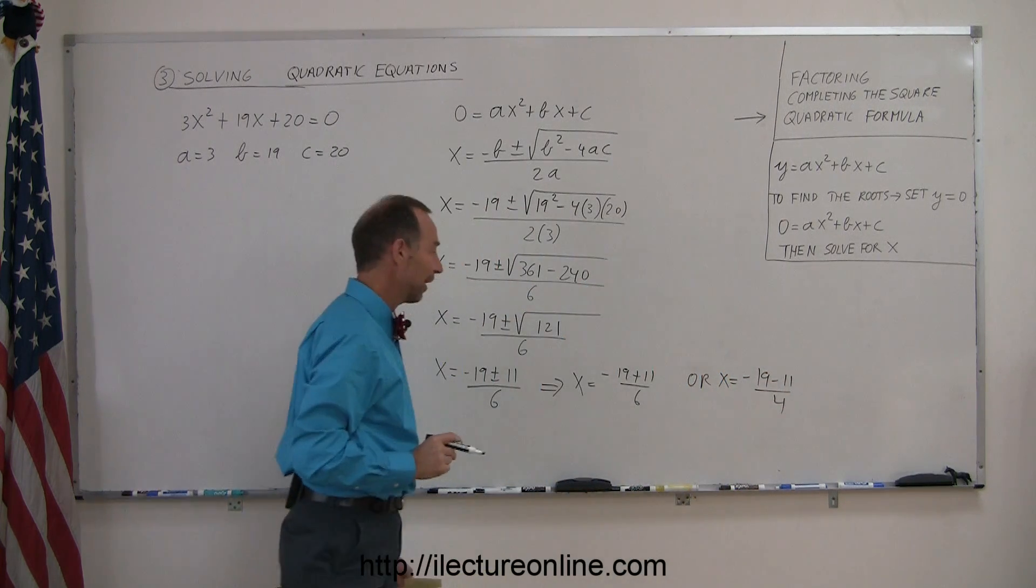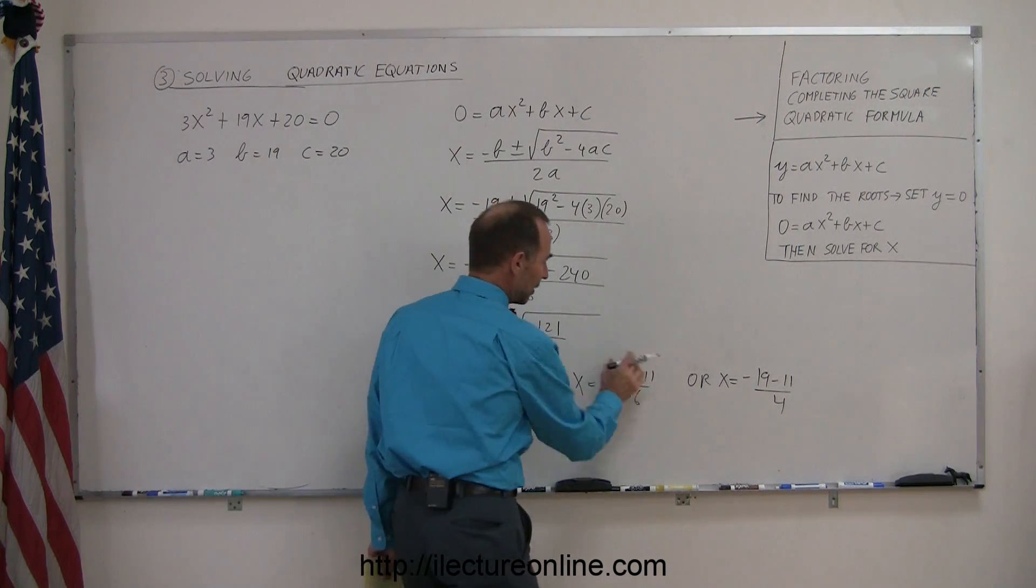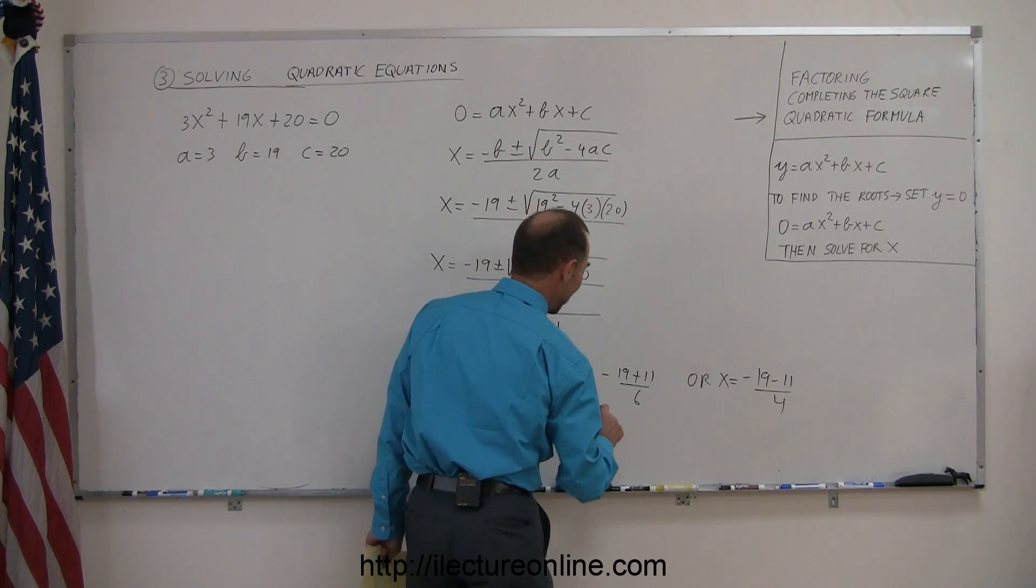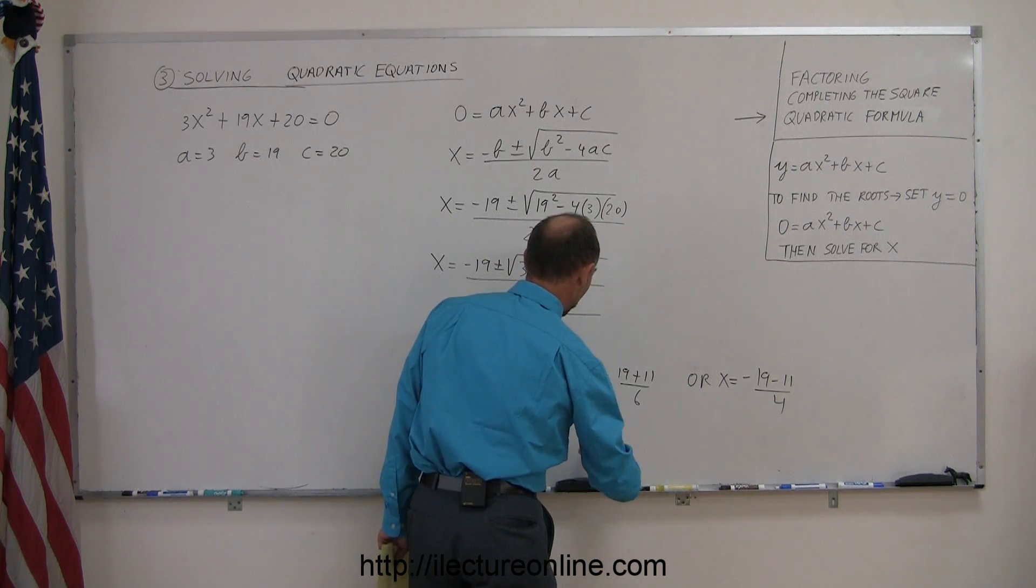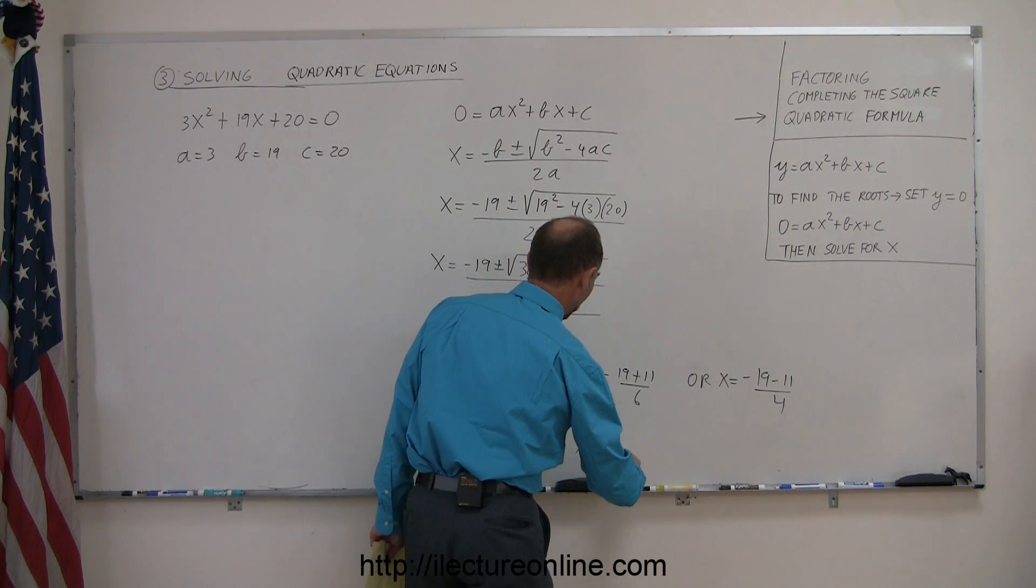And if we simplify those two possibilities, minus 19 plus 11 is minus 8, so x equals minus 8 over 6, that means x is equal to minus 4 over 3.